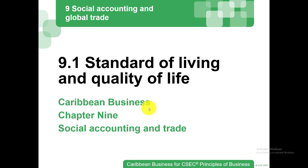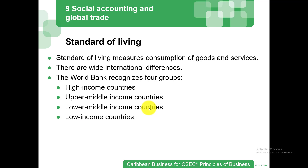The standard of living and quality of life are indicators that show just how a country is doing on certain fronts. The standard of living measures consumption of goods and services. There are wide international differences — different countries have different standards of living — and they are normally ranked based on the World Bank. The World Bank has four groups: high income countries, upper middle income countries, lower middle income countries, and low income countries.